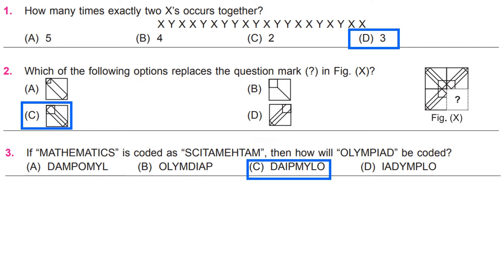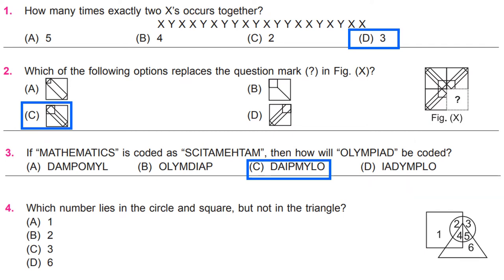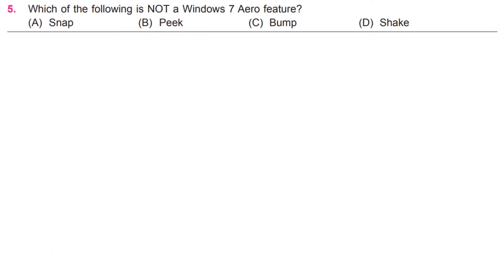C, DAIPYMYLO. Which number lies in the circle and square but not in the triangle? B, 2. Which of the following is not a Windows 7 Aero feature? C, Bump.